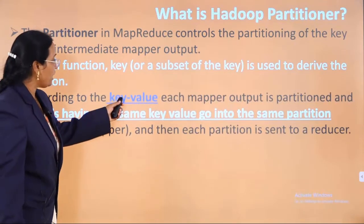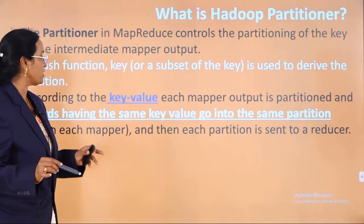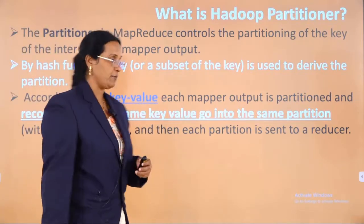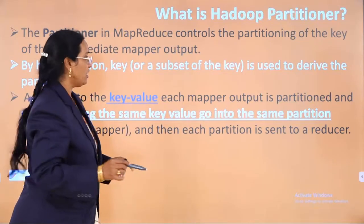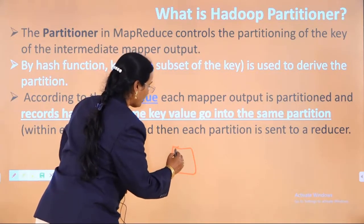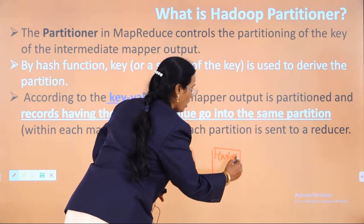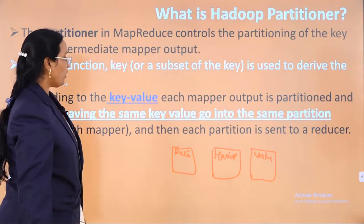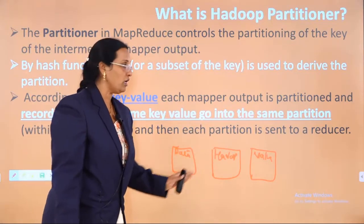According to the key value, each mapper output is partitioned, and records having the same key value go into the same partition, and then each partition is sent to the reducer. For example, all 'data' words should go into one partition, all 'Hadoop' words should go into one partition, and all words having the value 'words' should go into another partition.